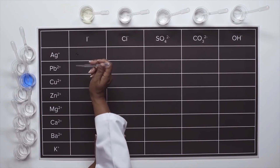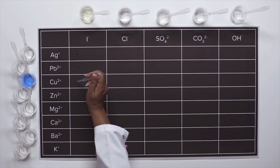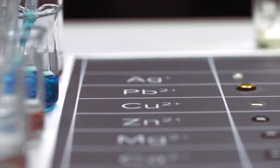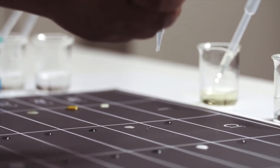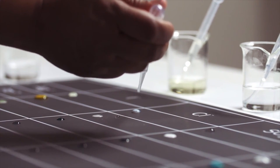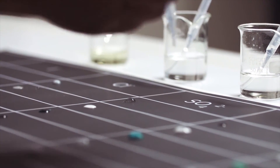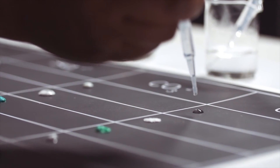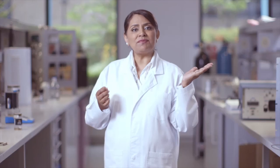We'll start by placing a drop of each of our cations on the grid, then each of our anions. As you can see, there are precipitates for some and not for others. We can tell when a precipitate forms as the sample will go cloudy. It will stay transparent if a precipitate does not form. Note the colour of the precipitates formed.